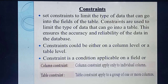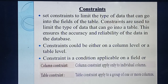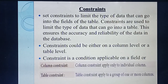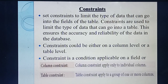Table constraint means you can apply conditions for more than one column — not just one or two columns but more number of columns. That is called table constraint. Understand the difference: column constraint means conditions applied to one individual column, table constraint means conditions applied to more number of columns.